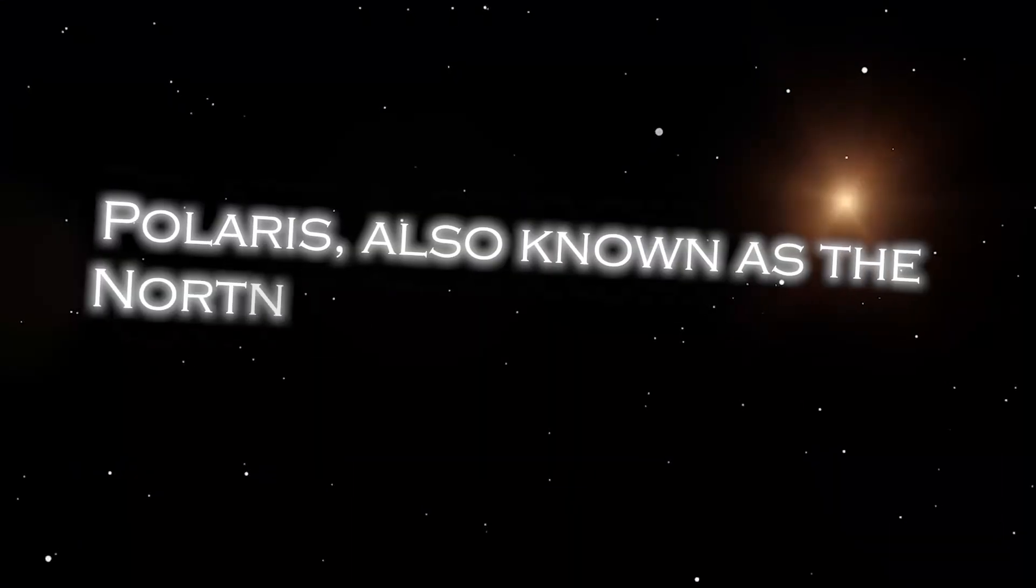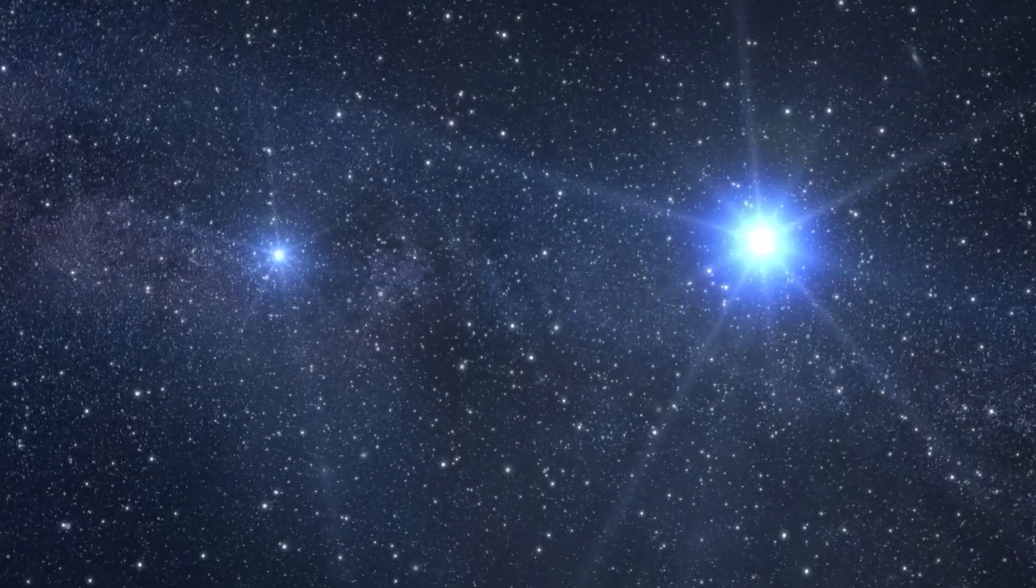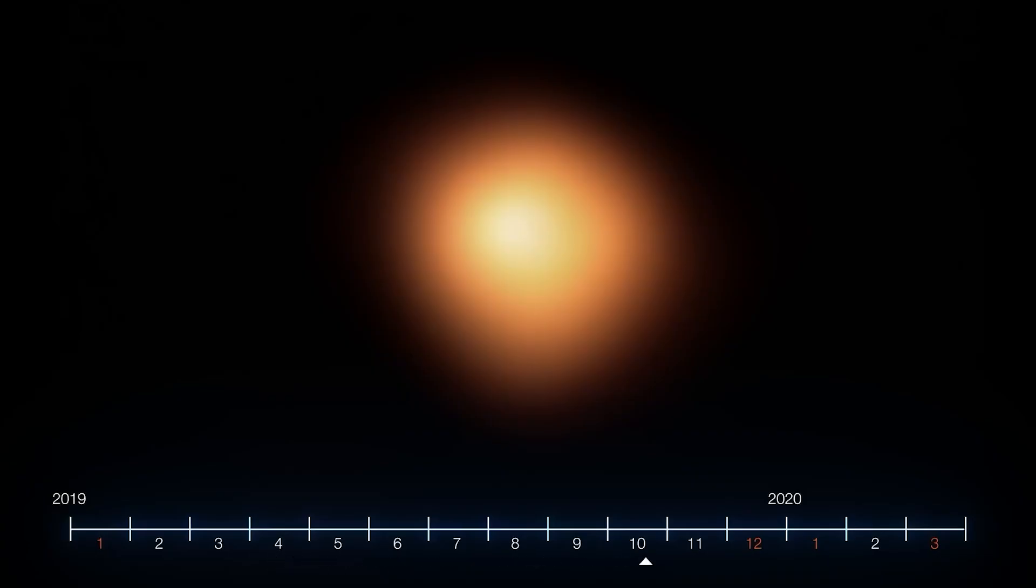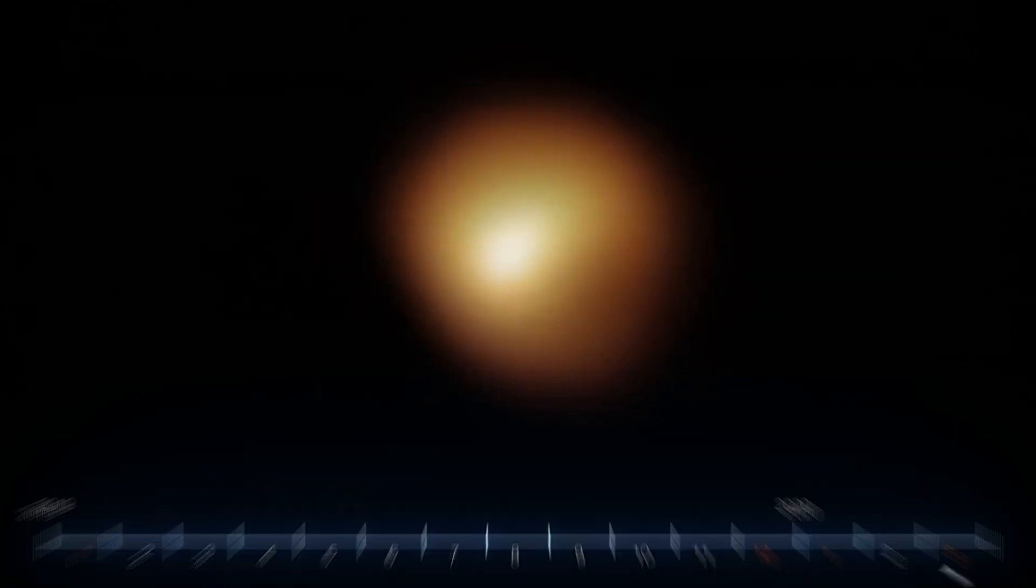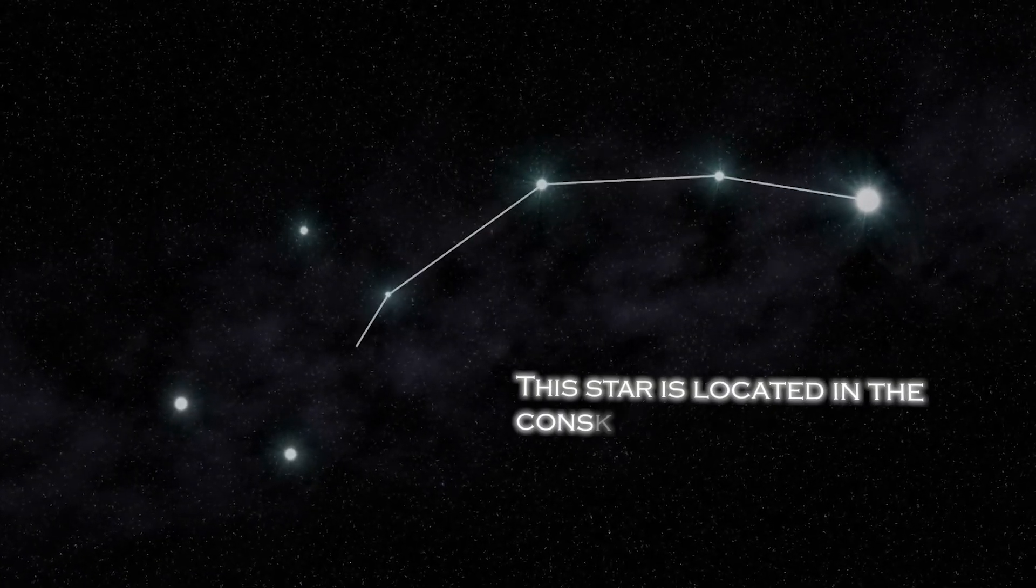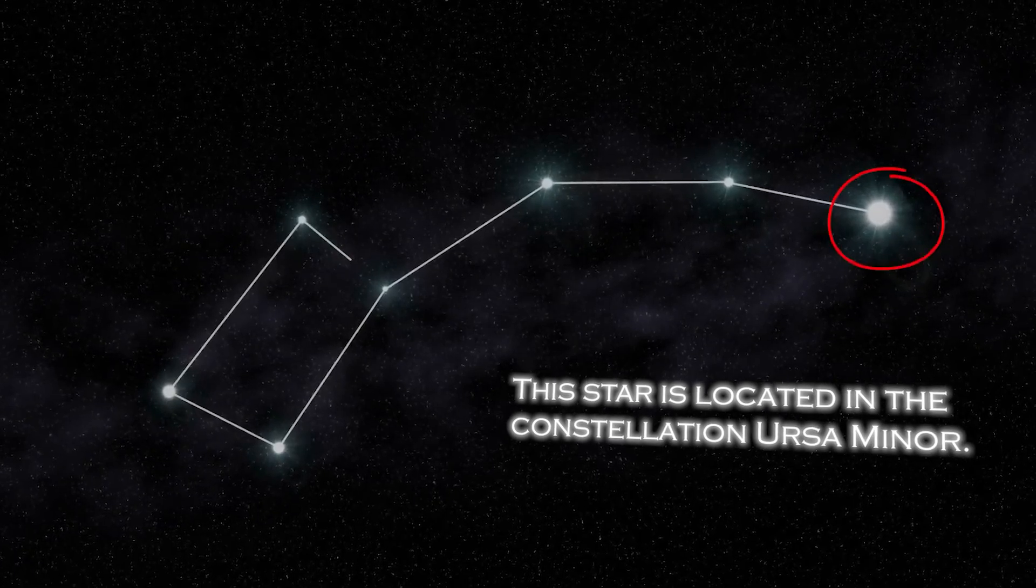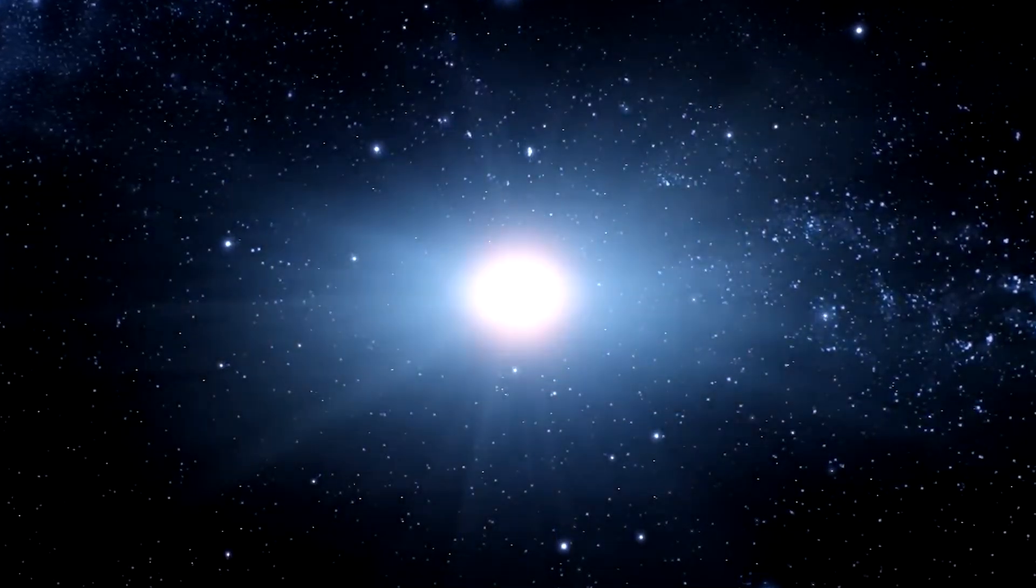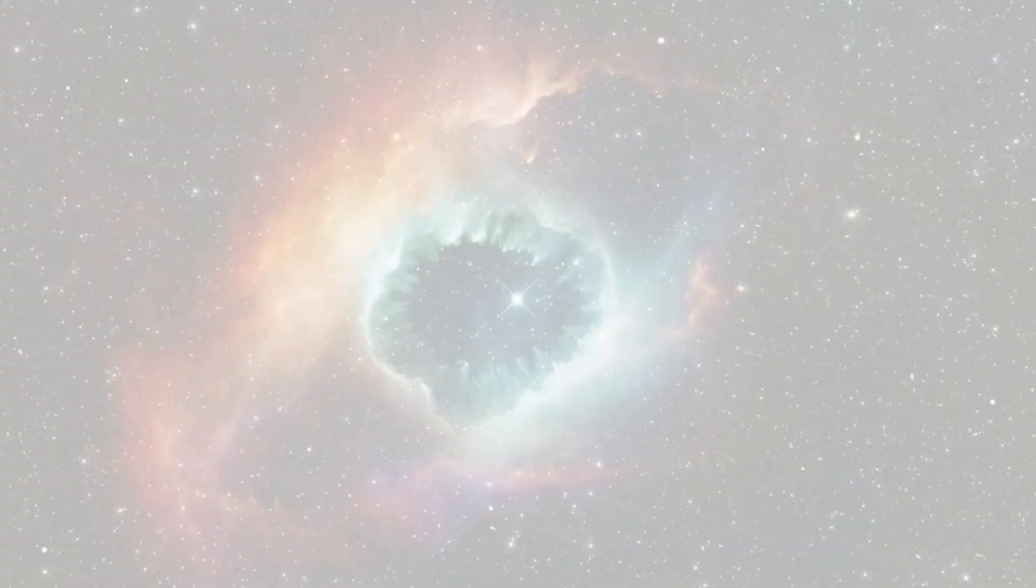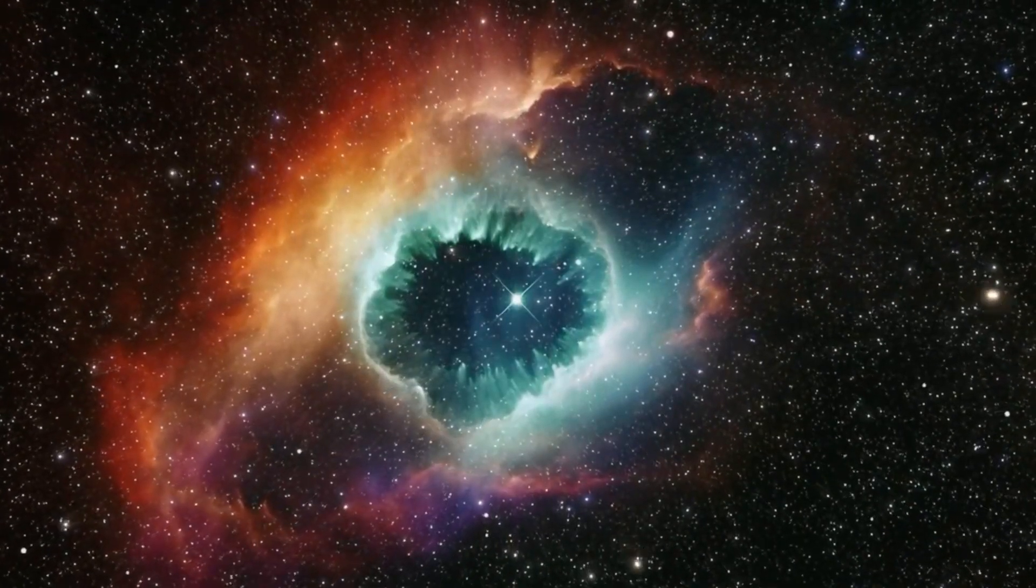Polaris, also known as the North Star, occupies a special position in the sky because of its proximity to the celestial North Pole. It is almost directly over the Earth's North Pole, which gives the illusion that it remains static in the northern sky. The star is located in the constellation Ursa Minor. Polaris is a star of moderate brightness that stands out as a yellow-white supergiant of considerable dimension compared to our Sun.